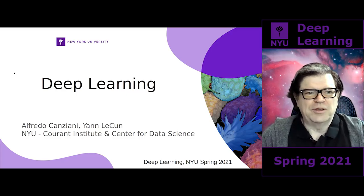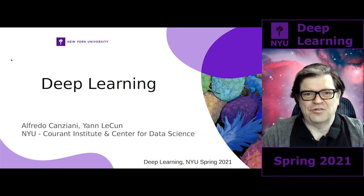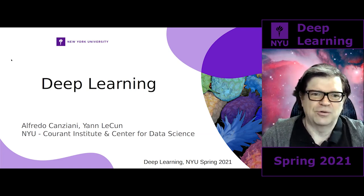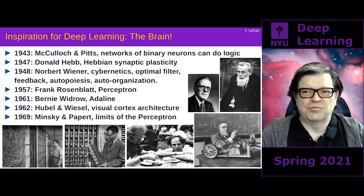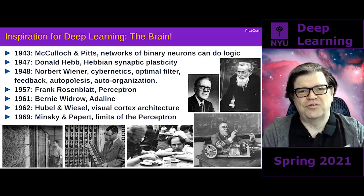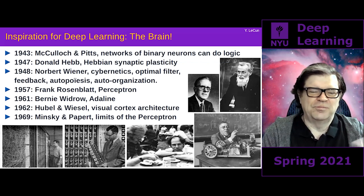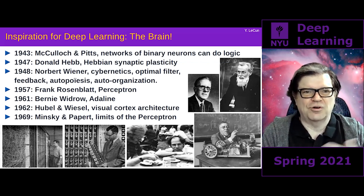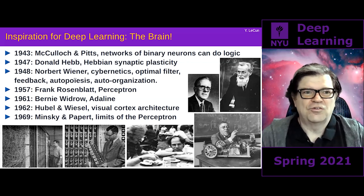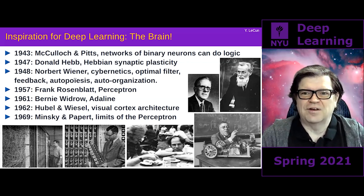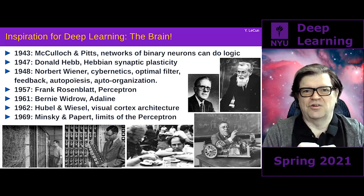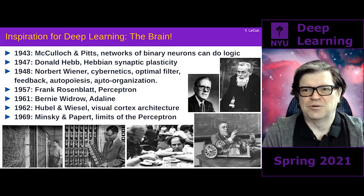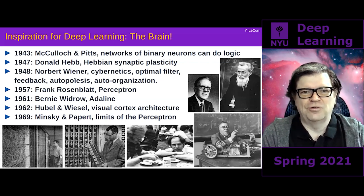I thought I would talk a little bit about the history of this, because it's not something we talk much about during lectures. Deep learning really is the descendant of work on neural nets, which itself descends from work where people tried to understand how biological systems self-organize. Going back to the 1940s, McCulloch and Pitts came up with the idea that if you connect very simple computing elements — essentially binary neurons — you can do logical operations, and if you can do logical operations, you can do reasoning.